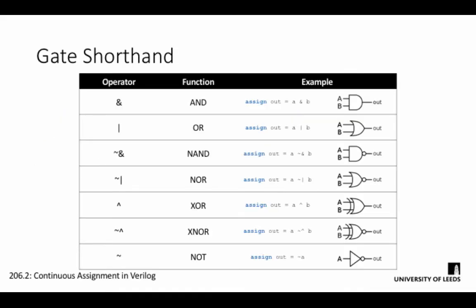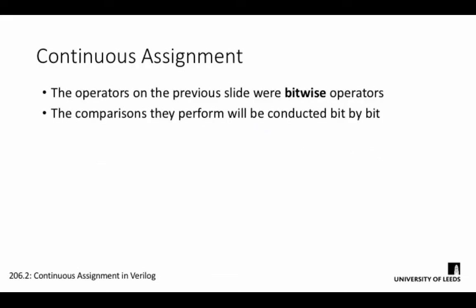In order to generate these expressions, we need to learn the notation, which is known as gate shorthand. We have individual operators representing each logic gate, as well as a NOT operator to generate things like NAND and NOR. By building equations using these operators, the Quartus compiler will build us a representative circuit. These operators are known as bitwise operators.